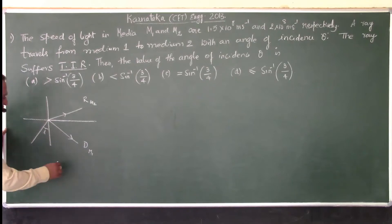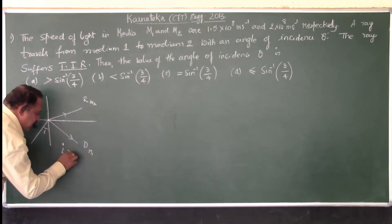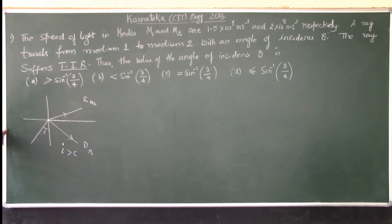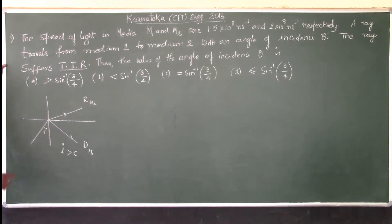you know critical angle is that angle of incidence in the denser medium for which the ray of light will get completely turned up into the denser medium itself.